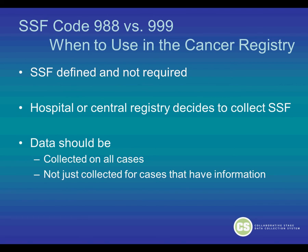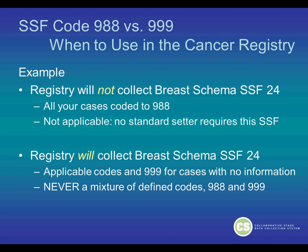When to use this in the cancer registry: If the Site-Specific Factor is defined and not required, and the hospital or central registry decides to collect it, data should be collected on all cases, not just the cases that have the information available. For example, if the registry will not collect Breast Schema Site-Specific Factor 24, then all of those cases should be coded to 988. If the registry will collect Breast Schema Site-Specific Factor 24, then they should use the applicable codes such as 10, 20, 30, and 999 for cases with no information. They should never have a mixture of defined codes, 988 and 999.